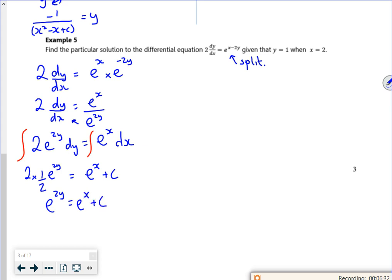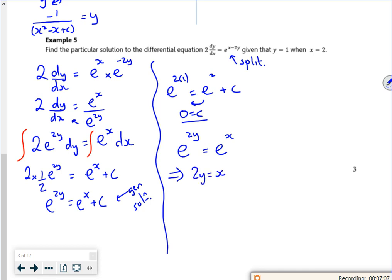Now it tells me 1 or 2, doesn't it? So I'm going to sub in now. This is my general solution. I'm going to sub in y is 1. So I've got e to the 2 lots of 1 is e to the 2 plus c. Now I've got e to the 2 equals e to the 2 plus c. If I take that away, it gives me 0 for c. So c actually disappears. And I've got e to the 2y is equal to e to the x. So that means then that 2y is equal to x. So y is equal to a half x.